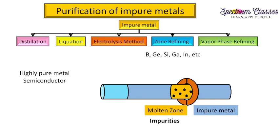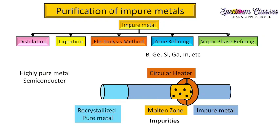As the circular heater moves along the impure metal bar, the molten zone carries impurities forward. Behind the heater, the metal cools down and recrystallizes as pure metal. On a single pass, highly pure metal may not be obtained, so this exercise can be repeated multiple times depending on the required purity of the metal.